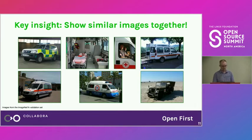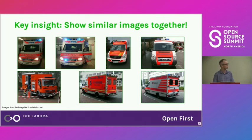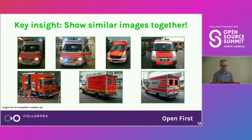Here are random images from ImageNet of ambulances. You can see all different kinds: the interior of an ambulance, people inside, ambulances from the outside, a military ambulance. Sorting them makes it much easier to focus, because similar poses and similar things are shown together, making it much easier to review whether they are correct or not.